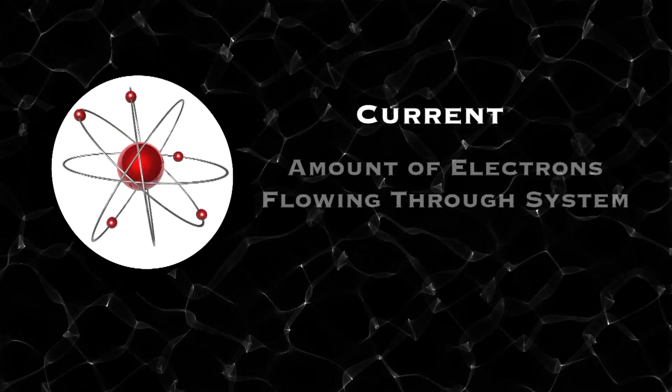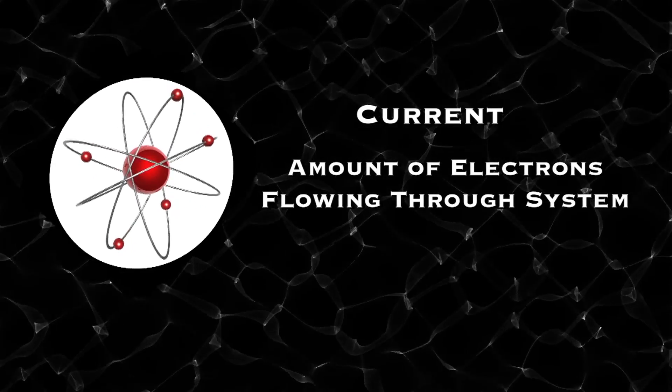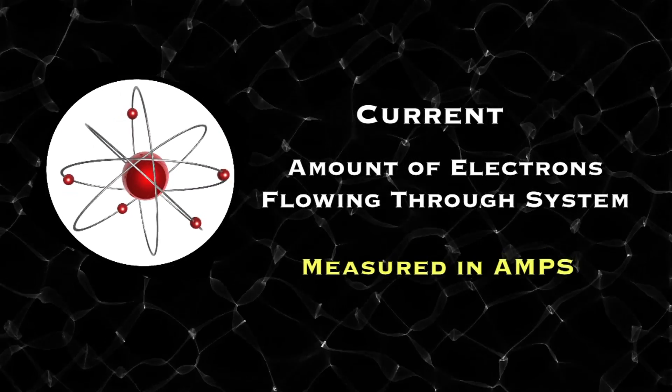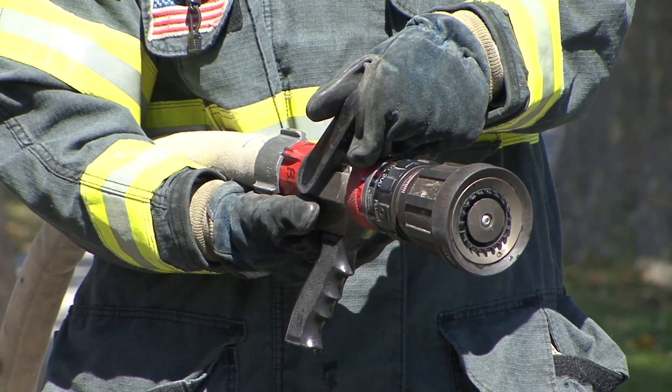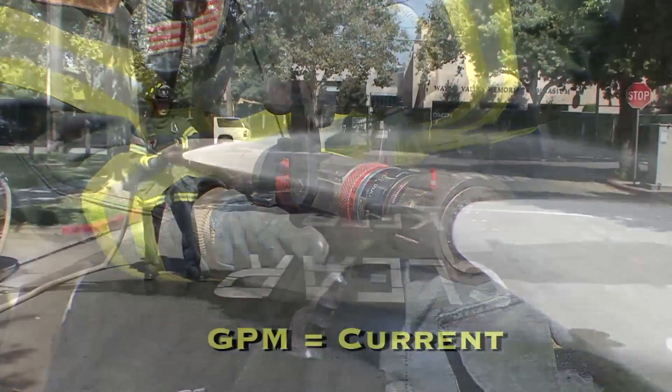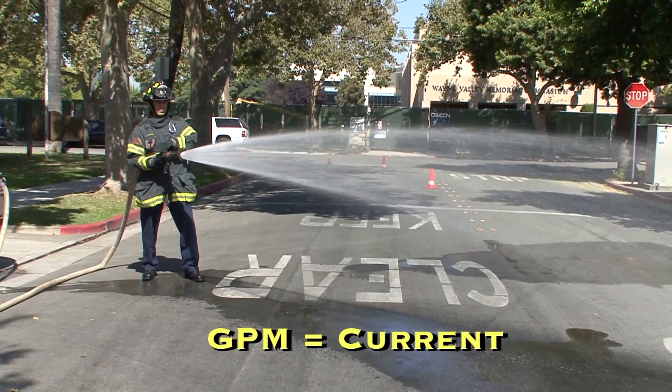Next one is current. Current is measuring the amount of electrons actually flowing through the electrical system, and that's measured in amps. In our case, it's the gallons per minute. So when you open the bale and the water's flowing, that's the same as the current flowing.